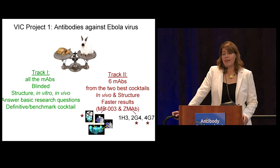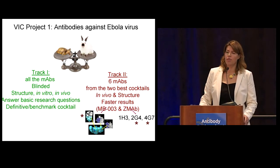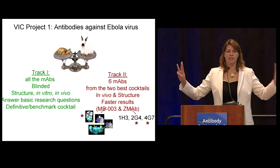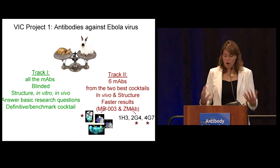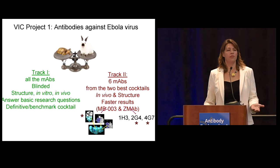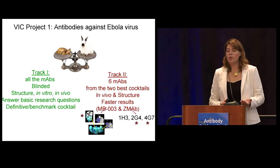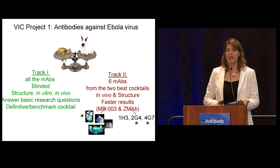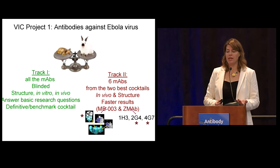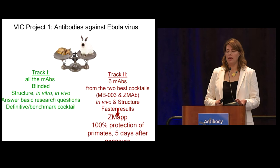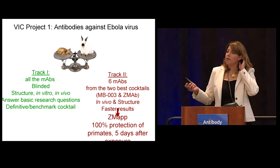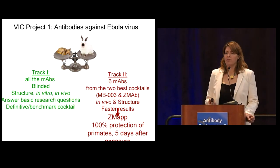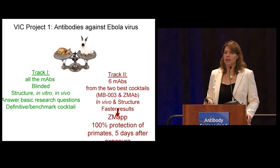The hare strategy was to take those two three-monoclonal cocktails — MB003 and ZMapp — from USAMRIID and Canada, and just mix and match those six antibodies: solve structures and put different combinations in primates. ZMapp turned out to be two from Canada and one from USAMRIID, and it offered complete protection of primates even five days after exposure to a lethal dose. In this animal model, those primates typically die around day seven or eight, so these were very sick animals, and it was able to protect all of them.